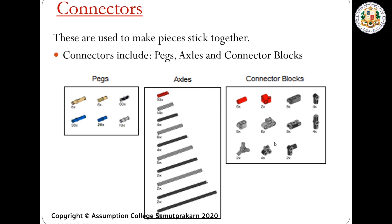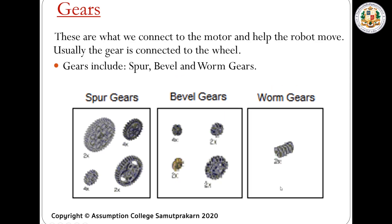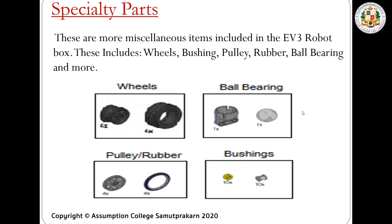Next we have the connectors — we have pegs, axles, and connector blocks. These are used to connect the pieces together or make the pieces stick together. Next we have the gears: spur gears, bevel gears, and worm gears. These connect to the motor and help the robot move; usually the gear is connected to the wheel. Next we have the specialty parts: wheels, ball bearings, pulley rubber, and bushings. These are more miscellaneous items included in the EV3 robot box. Ball bearings help the robot turn, pulleys or rubber are used with additional motors, and bushings lock pieces together.